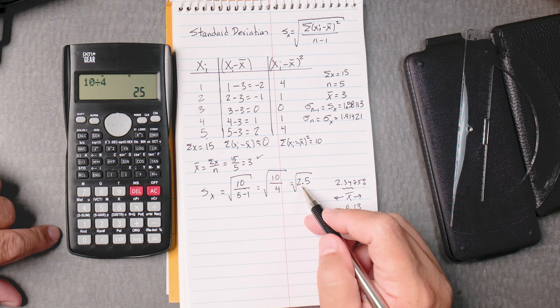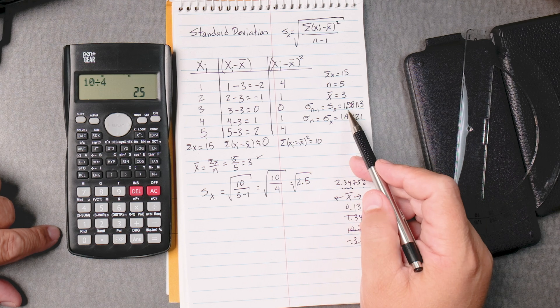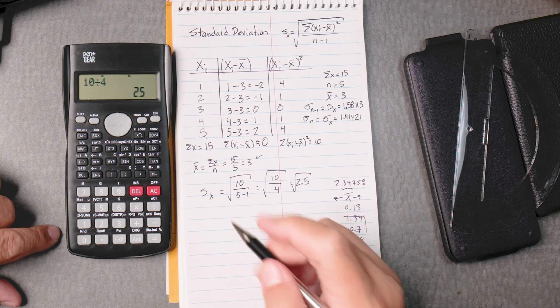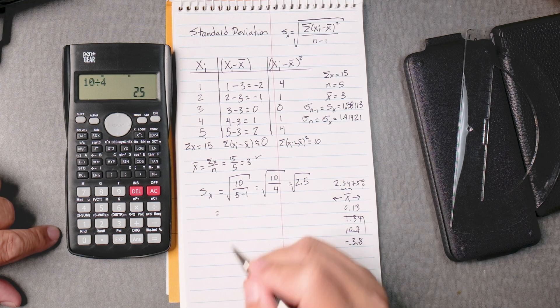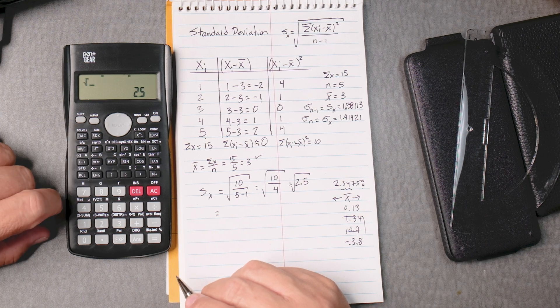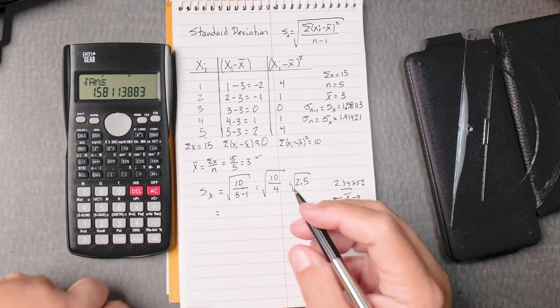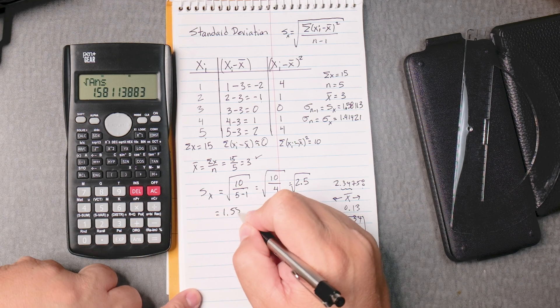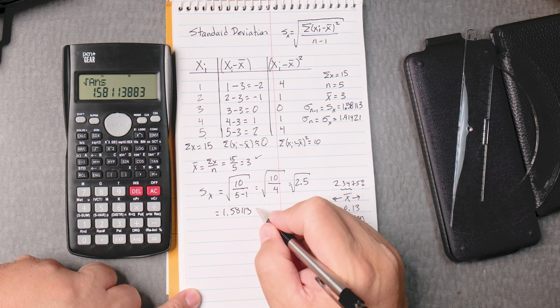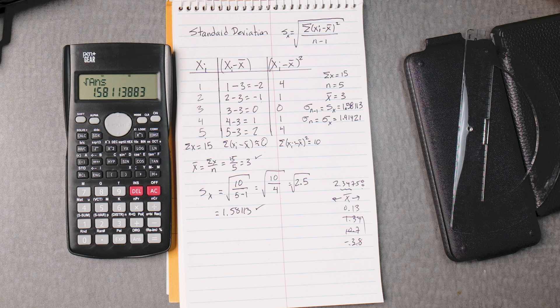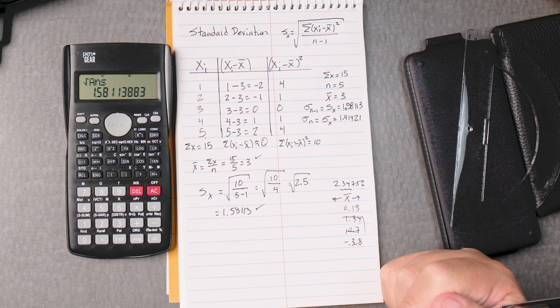And even if I did get it wrong, it wouldn't come out to be 1.58 and then I would have to backtrack. Then we're going to take the square root of the answer and then equals and we get 1.58113. Boom. Perfect. The same answer as the calculator. That's amazing. That's wonderful.